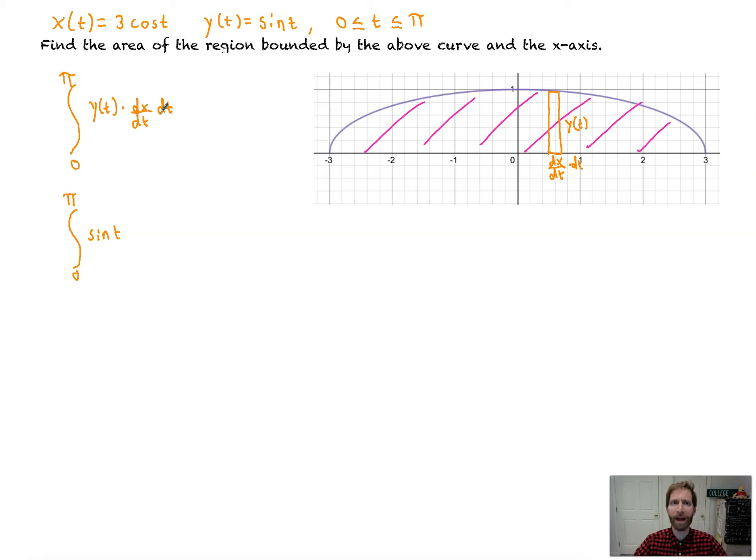dx/dt - we don't have that. It's okay. We'll find it. dx/dt, or x'(t), is equal to negative 3sin(t). The derivative of cosine is negative sine, times 3 is negative 3sin(t). So that's times negative 3sin(t), dt.